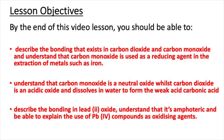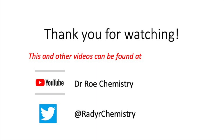That concludes this video lesson. After watching, you should now be able to describe the bonding in carbon dioxide and carbon monoxide, understand that carbon monoxide is used as a reducing agent in the extraction of metals such as iron, understand that carbon monoxide is a neutral oxide whilst carbon dioxide is an acidic oxide that dissolves in water to form the weak acid carbonic acid, and describe the bonding in lead 2 oxide, its amphoteric nature, and the use of lead 4 compounds as oxidising agents. Please check out our YouTube channel Dr. Rho Chemistry, which has lots of GCSE, AS and A-level videos, and our Twitter site at Rada Chemistry.